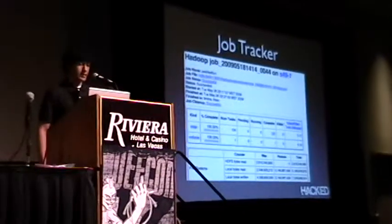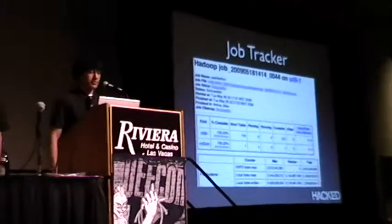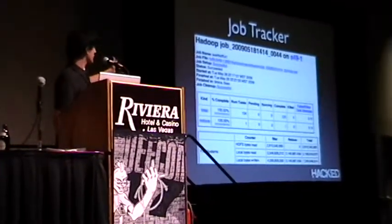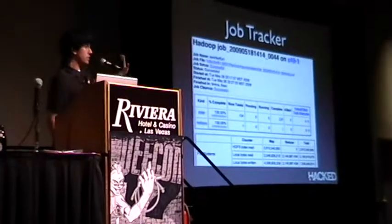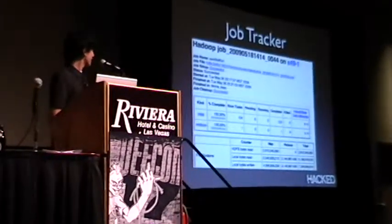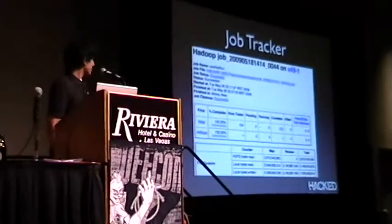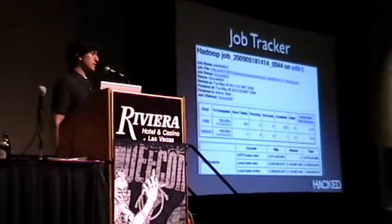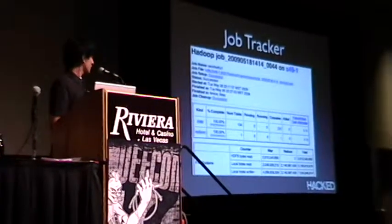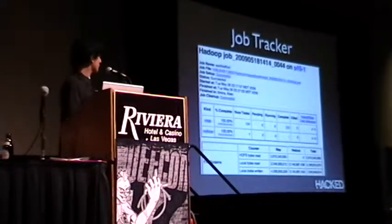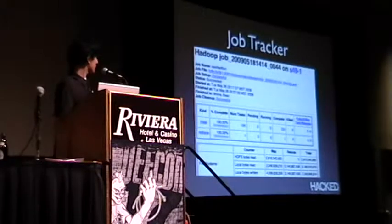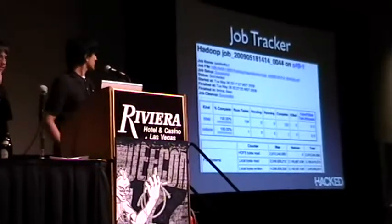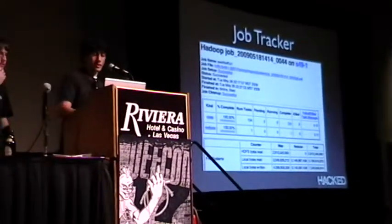Here's an example of the job tracker. We spent hours watching these progress bars go by slowly. You can see there were 104 map tasks because we had 100 processors, so we basically wanted to get it as close as possible to 100. That's basically what the job tracker looks like.